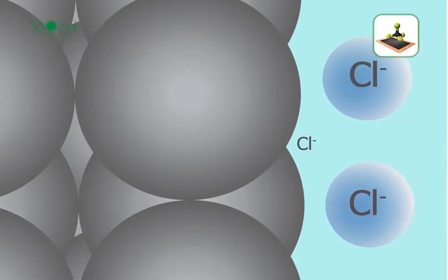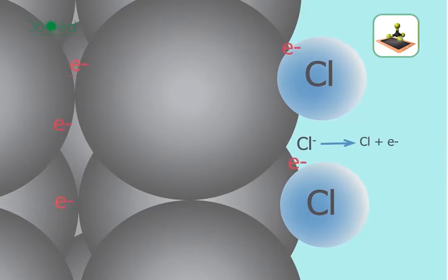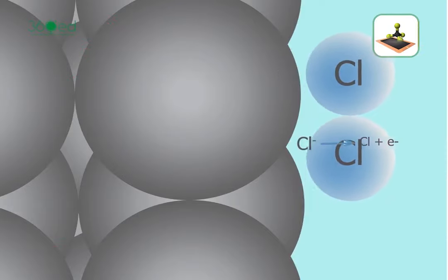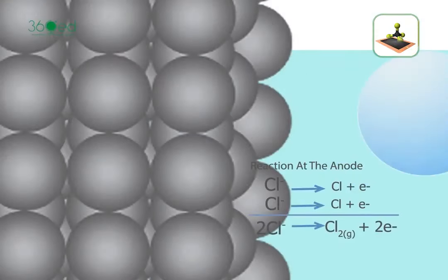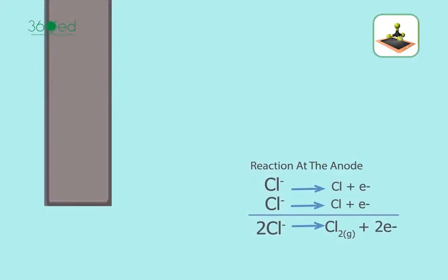Similarly, chlorine ions give off electrons to the anode and discharge into chlorine atoms, and the chlorine atoms combine with each other to become chlorine molecules. Chlorine gas is evolved.